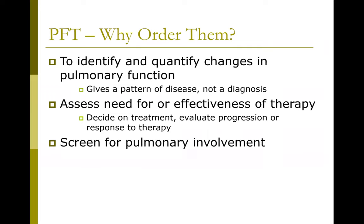Another possibility is to screen for a pulmonary illness. Some patients will have systemic illnesses such as HIV, rheumatoid arthritis, or pulmonary hypertension, and you want to screen their pulmonary function tests to make sure you don't miss when these patients develop pulmonary physiology abnormalities. You want to track that at the beginning of treatment their pulmonary function is at a certain level, and monitor whether that changes over the course of treatment.